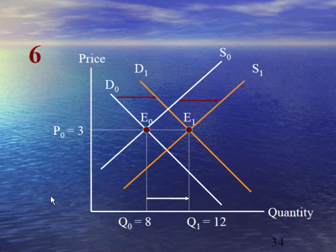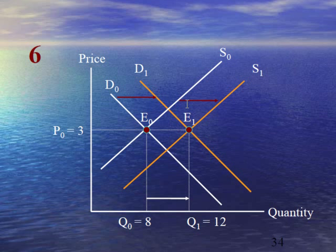Case number 6 explains changes in both demand and supply, where rise in demand is equal to rise in supply. The demand curve shifts from D₀ to D₁ and the supply curve shifts from S₀ to S₁. As a result, the equilibrium point moves from E₀ to E₁. When the changes in demand and supply are the same, the equilibrium price will remain the same at 3, whereas equilibrium quantity will increase from 8 to 12.